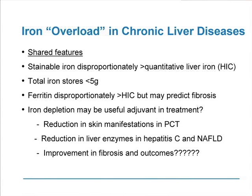Iron depletion in some circumstances may be useful as an adjuvant treatment — particularly reduction of the skin rash in porphyria cutanea tarda, or reduction in liver enzymes in hepatitis C and fatty liver disease. The big question, which remains unanswered, is whether reduction of iron in these individuals has any benefit in terms of fibrosis and ultimately in survival outcome. These are not yet answered and will need controlled studies.